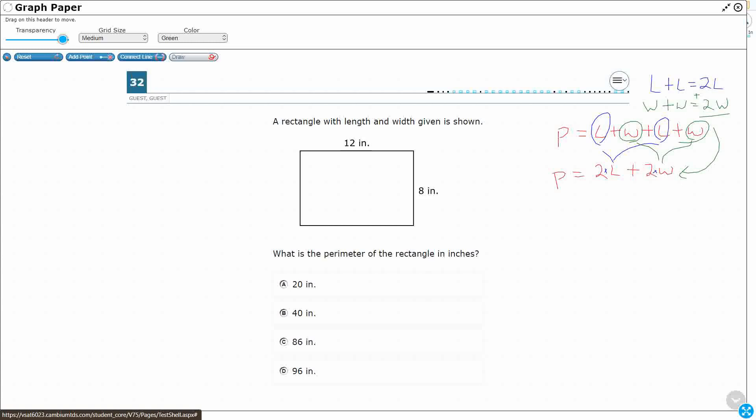So we're going to call this our length, because that's the longer one. We're going to call this our width. So let's do this first one. Length 12 plus width 8 plus length 12, right? Because really this is what we're doing. We're adding all the way around. And then plus width 8.